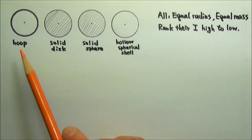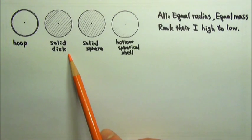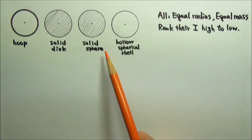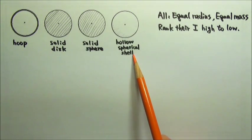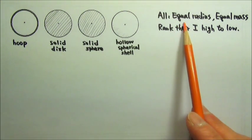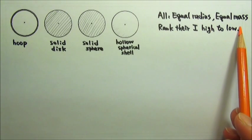Here we have four objects: a hoop, a uniform solid disk, a uniform solid sphere, and a hollow thin spherical shell. They are made of different materials, so they can all have equal radius and equal mass.